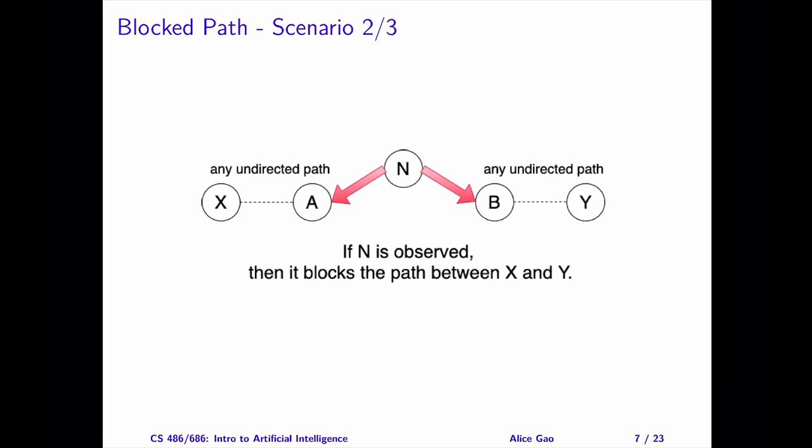Scenario two: The two arrows around N point away from N to the two children A and B. If the arrows depict causal relationships, you can think of A and B as unreliable sensors of N. If N is observed, then N blocks the path between X and Y.